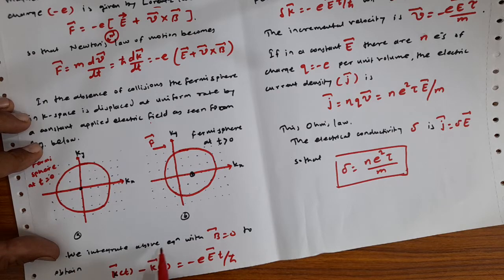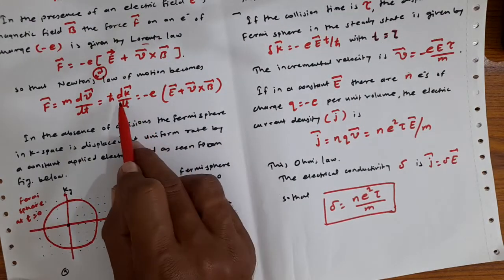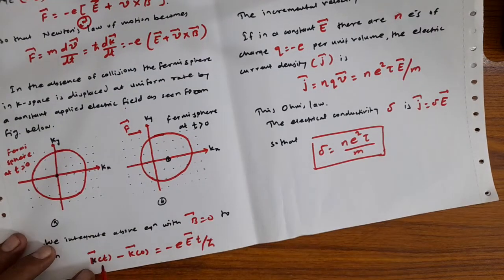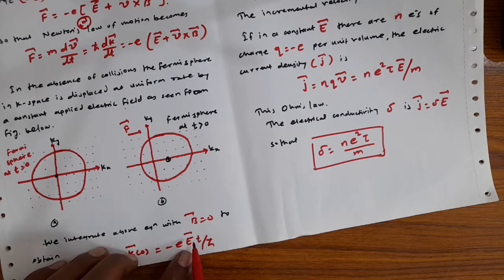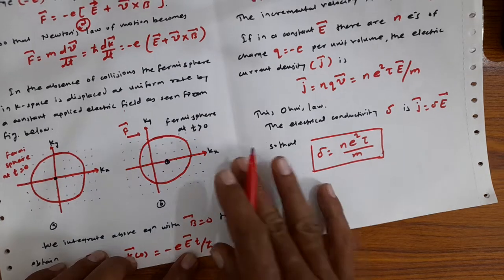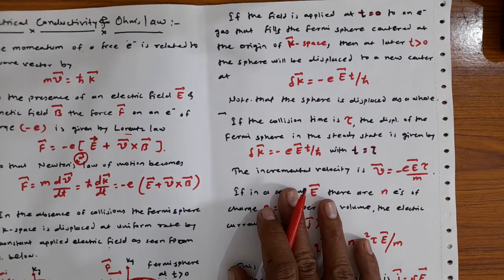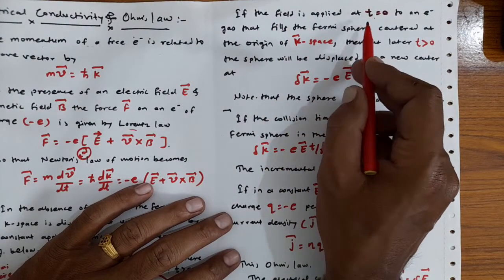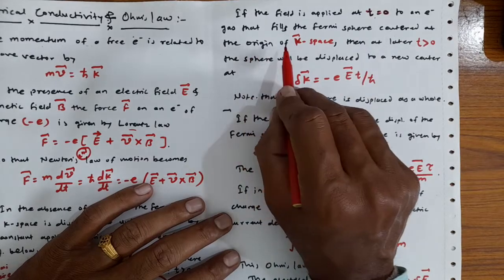Integrating the equation of motion with B = 0 — in the absence of the magnetic field — from time 0 to time t, we obtain k̄(t) − k̄(0) = −eĒt/ℏ. If the field is applied at time t = 0 to an electron gas that fills the Fermi sphere centered at the origin of k-space, this gives us the shift in wave vector.